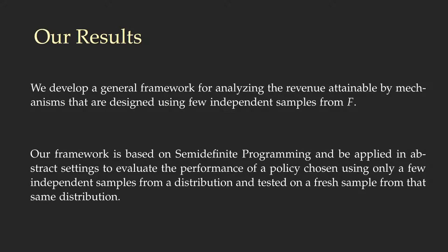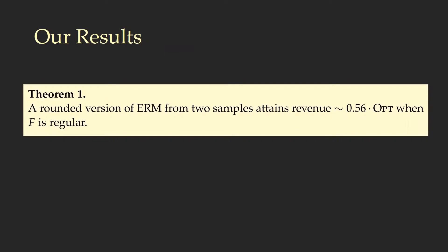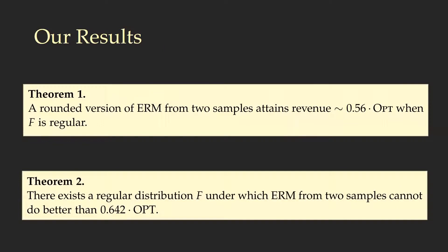Our framework is based on semi-definite programming and can be applied in abstract settings to evaluate the performance of some policy chosen using only a few independent samples from a distribution, where the performance is then tested on a fresh sample from the same distribution. Our first result is that a rounded version of the empirical revenue maximization mechanism with two samples attains a revenue of approximately 0.56 times the optimum when the distribution F is regular. We also prove a lower bound by providing a regular distribution F under which the empirical revenue maximization mechanism from two samples cannot do better than 0.642 times the optimum.